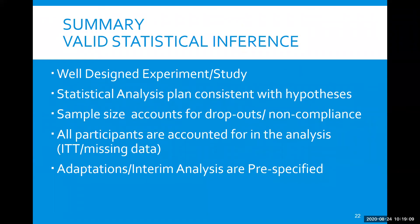In summary, in order to have valid statistical inference, the number one key is to have a well-designed study. Then we need a statistical analysis plan that is consistent with the hypotheses of interest and a sample size that accounts for dropouts and noncompliance. All patients should be accounted for in the analysis — ideally an intent-to-treat analysis with an acceptable methodology for handling missing data. Any adaptations or interim analyses ought to be pre-specified.